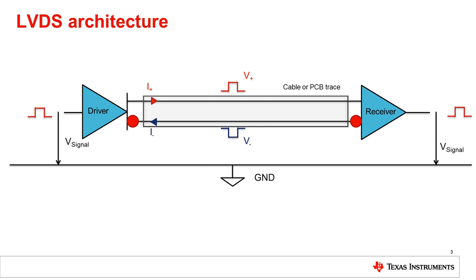Instead of measuring the difference between the signal and ground, like with single-ended signaling, LVDS measures the difference between the non-inverting and inverting levels of the signals. A termination resistor is placed at the end of the transmission line to terminate the signal.